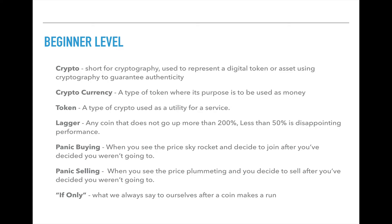A lagger is a coin — any coin or altcoin that hasn't increased by 200% or more. Typically a lot of people would be satisfied by an increase of 50% and up, but in the crypto space, anything below 50% is actually a lagger.